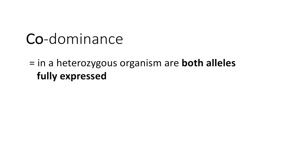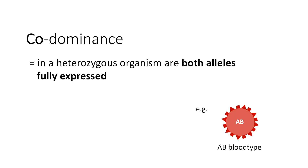The next term is codominance. Codominance occurs if both alleles are fully expressed. We have the AB blood type again as an example: if we have AB blood type, we have both the A and the B allele, and that is an example of codominance, since both the A and the B allele are fully expressed. Both surface proteins can be found on our erythrocytes.